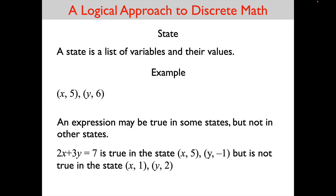Why is 2 times x plus 3 times y equals 7 an expression? First, 2 is an expression because it is a constant. x is an expression because it is a variable. The multiply sign, which is omitted by convention in algebra but is still there, sits between the 2 and the x — so the multiply sign is a binary infix operator, making 2 times x an expression. Similarly, 3 times y is an expression because 3 is a constant and y is a variable. The plus operator between 2x and 3y makes 2x plus 3y an expression. Finally, 7 is an expression because it is a constant, and the equal sign is a binary infix operator, so the whole thing is an expression.